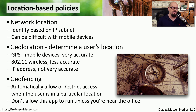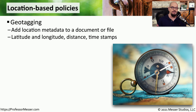We might combine this location data with a policy that uses geofencing. Geofencing allows you to set a policy based on where a user might be physically located — if someone is inside the building there may be one set of policies, but if they're outside the building or in another city, there may be a completely different set. We might also take advantage of geotagging, which is location information added to the metadata of documents a user is storing, such as GPS coordinates embedded in an image or video taken on their mobile device.